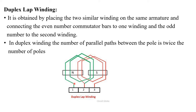In duplex lap winding, which is obtained by placing two similar windings on the same armature and connecting the even-numbered commutator bars to one winding and the odd-numbered to the second winding. In this diagram you can see duplex lap winding. This green colored coil will start from commutator segment 1, wound like this, and this region will not directly enter the second commutator segment — if it did, it would be simplex lap winding. Instead it continuously winds and then enters the second commutator segment. Here you can see four parallel paths in the green colored coils.